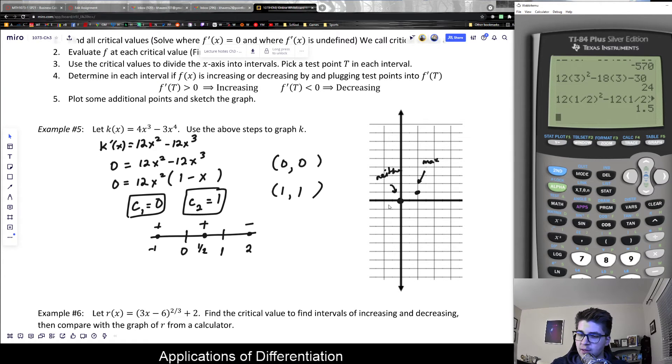I could also plug those values into the original function to see what are those actual points at those locations: -1 comma what, 1/2 comma what, 2 comma what. When I'm doing this, I would want to plug them into the original function and I do care about the value because I'm trying to actually graph the original function k(x). k'(x) does not help me graph the values; it helps me figure out other information.